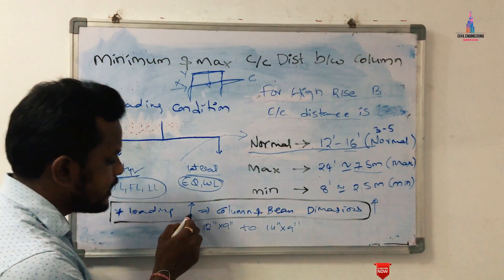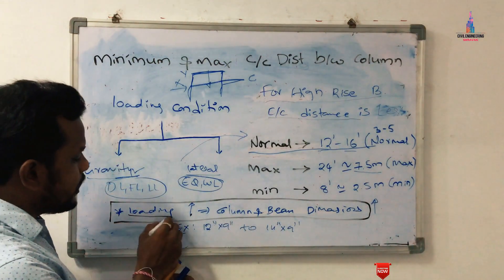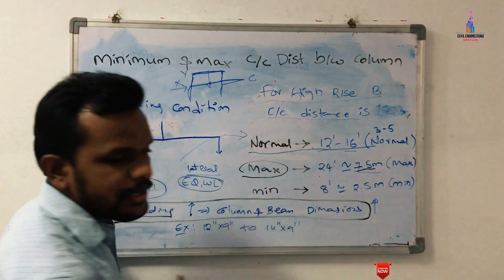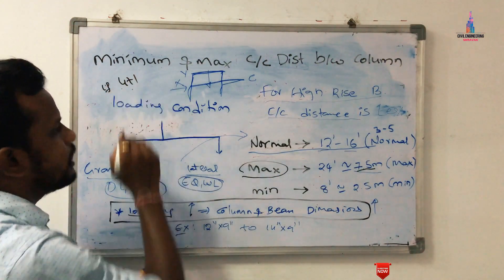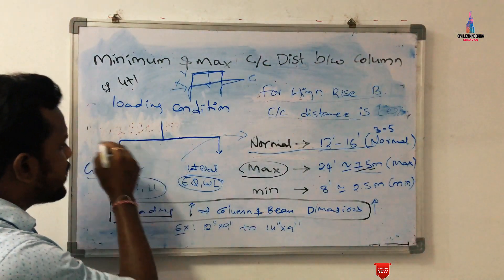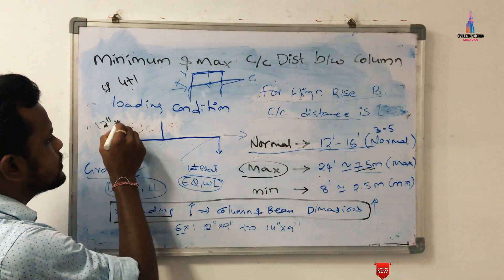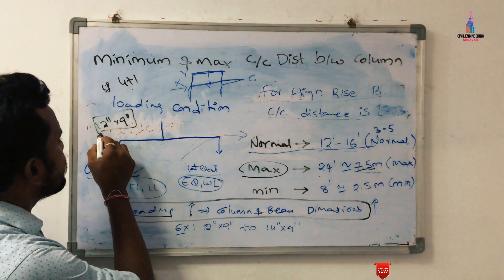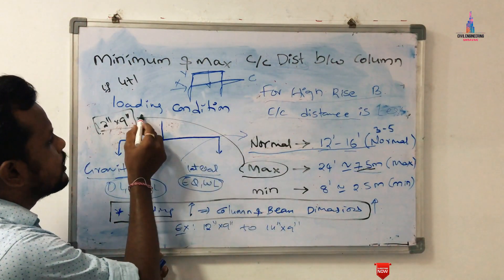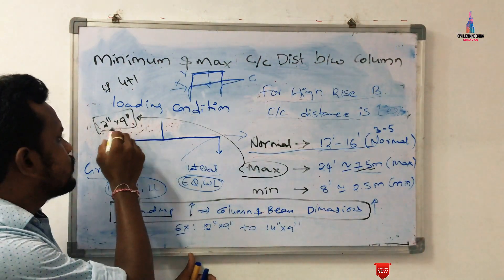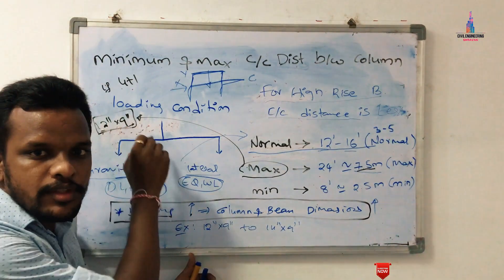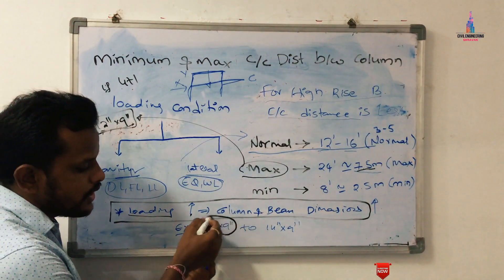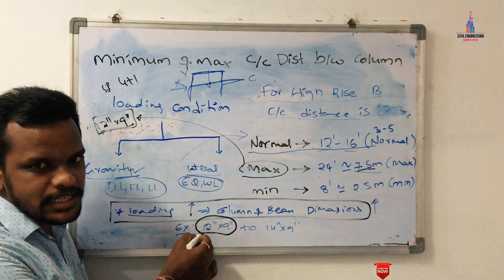If the loading condition increases, the column and beam dimensions also increase. For a G+1 building model at 7.5 meters span, we generally take beam and column dimensions of approximately 12 inches by 9 inches. These are the dimensions typically used for designing a G+1 structure. However, when the span reaches the maximum condition, these dimensions may not be sufficient.